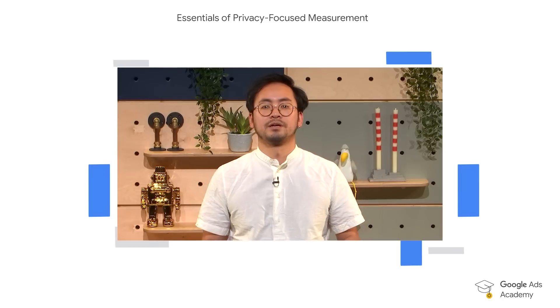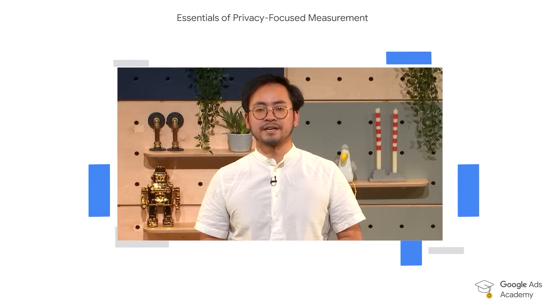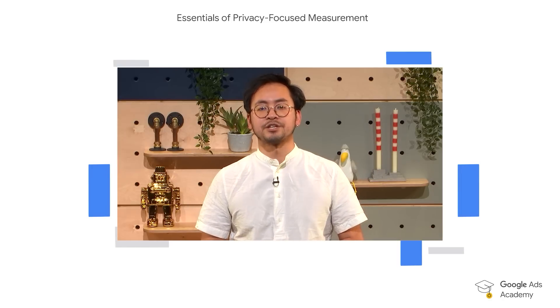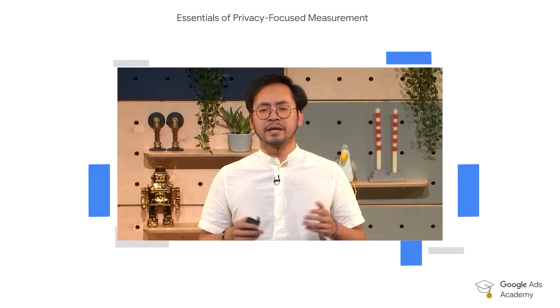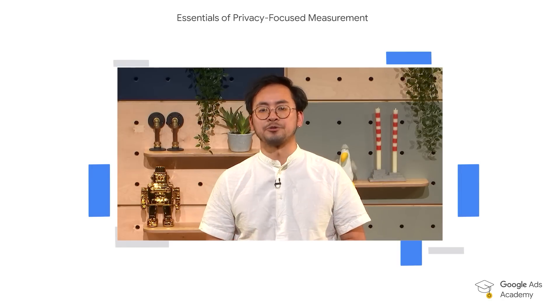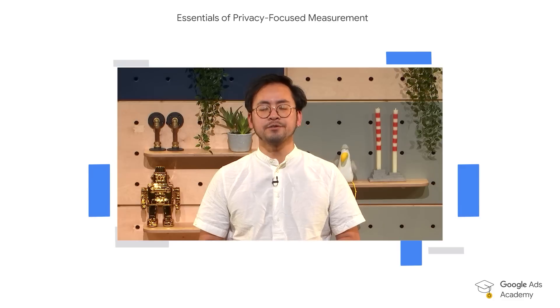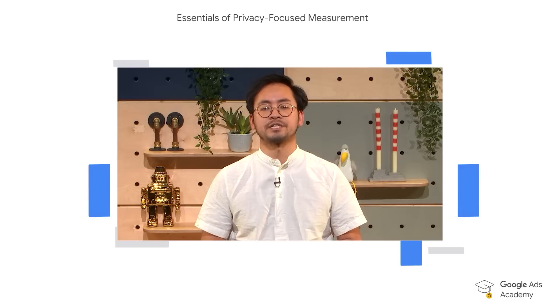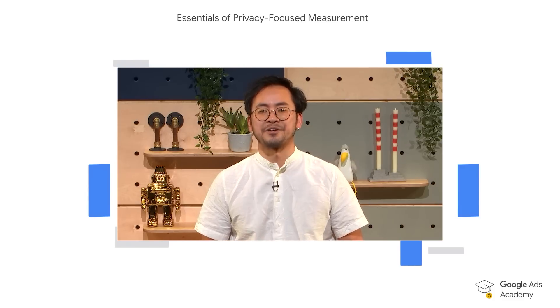If you combine the first-party data approach with smart bidding, you make sure to provide it with the most accurate and relevant data. Smart bidding will use both observable and modeled data gathered from enhanced conversion and Consent Mode to best predict outcomes and optimize towards performance. I hope that you found this session useful, and I'm handing it over now to Pipa to take you through the different steps of the Google Analytics migration.